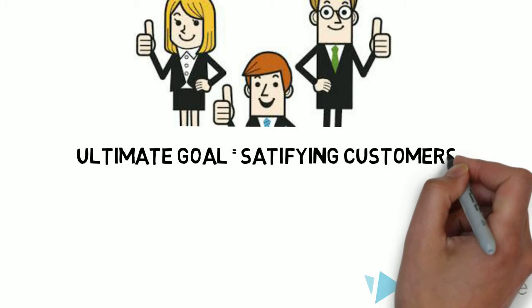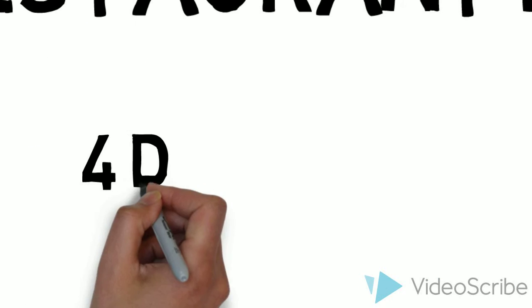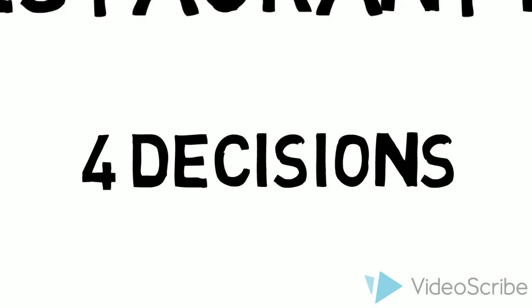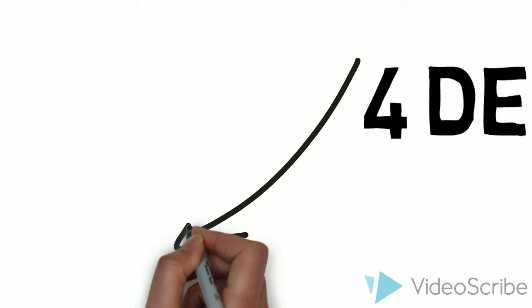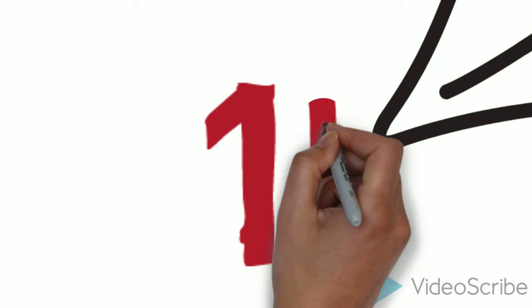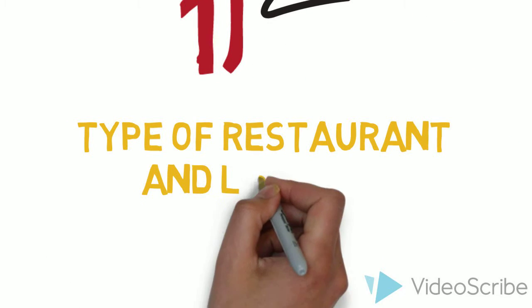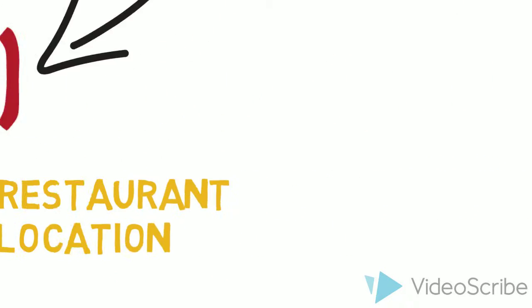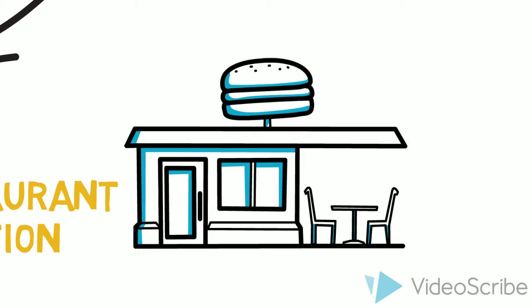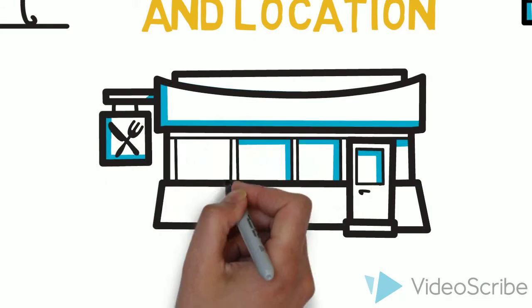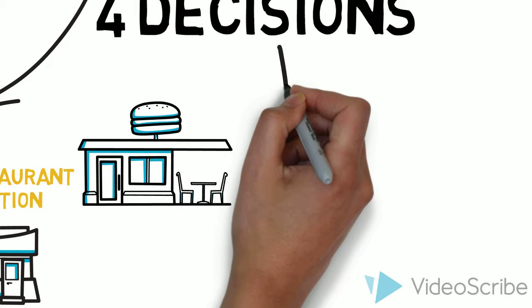We have identified four major categories of decisions that restaurateurs face. The first decision that aspiring restaurateurs need to make concerns the kind of restaurant and location they want to invest in, the optimal choice being the one that attracts their consumer market. They are confronted to many choices ranging from cafes to fast food restaurants, passing by diners. This first decision will generally have a big impact on future ones.